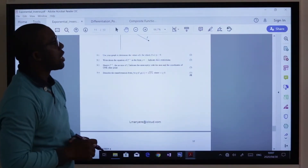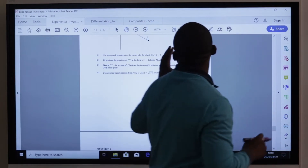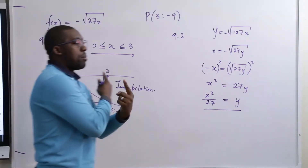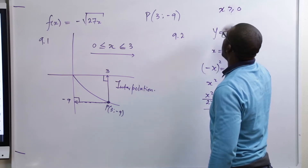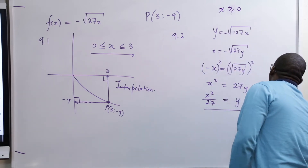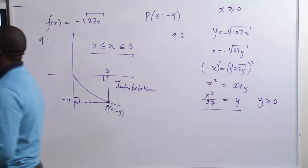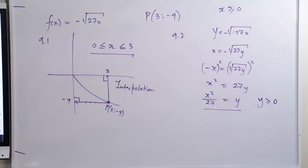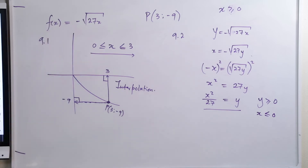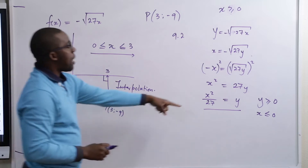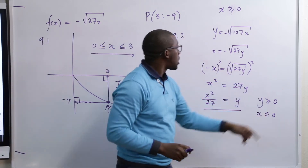They also say indicate all restrictions. When moving from the original function to its inverse, the domain and range change. In the original function, the domain was X greater or equal to 0. Conversely, for the inverse, Y must be greater or equal to 0, and the corresponding X values are going to be less than or equal to 0. There are two marks for the equation and half a mark each for the domain and range restrictions.